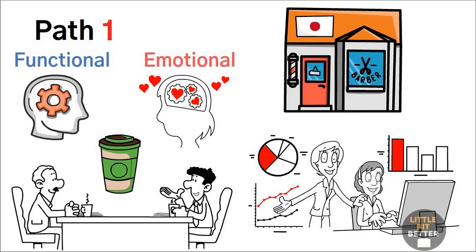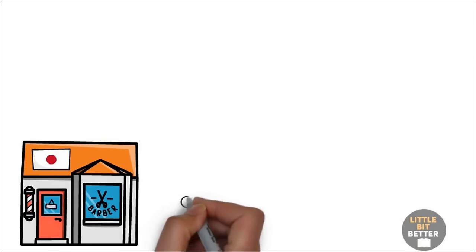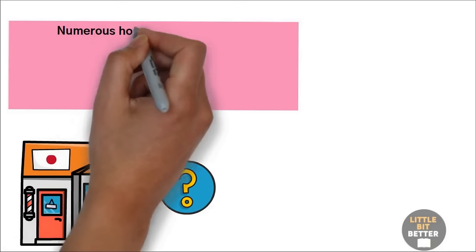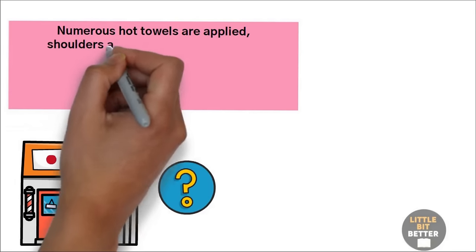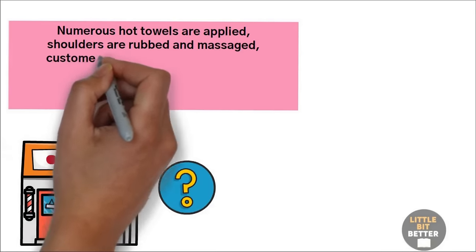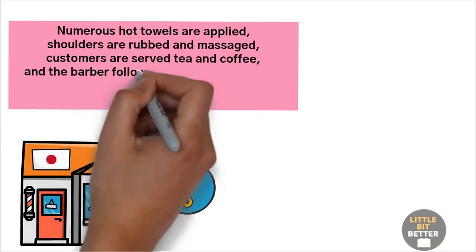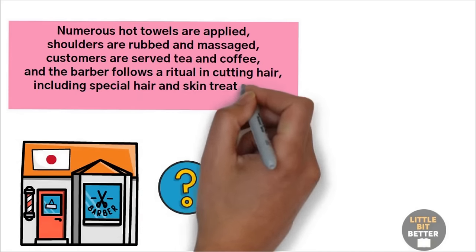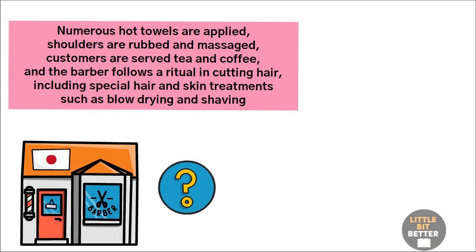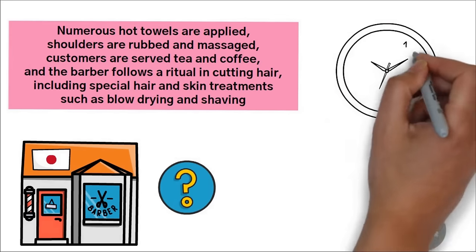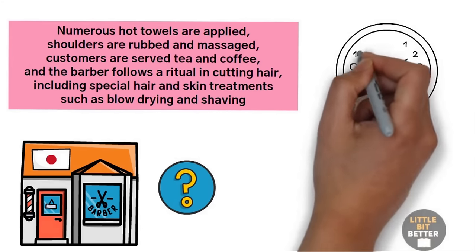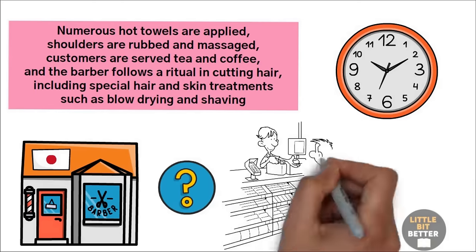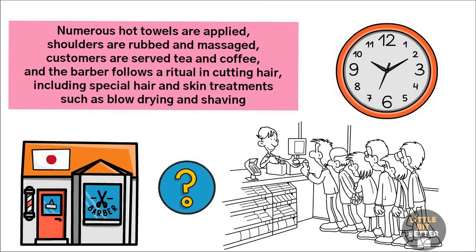Why? A long process of activities is undertaken to make the haircutting experience a ritual. Numerous hot towels are applied, shoulders are rubbed and massaged, customers are served tea and coffee, and the barber follows a ritual in cutting hair, including special hair and skin treatments, such as blow drying and shaving. The result is that the actual time spent cutting hair is a fraction of the total time. Moreover, these actions create a long queue for other potential customers.